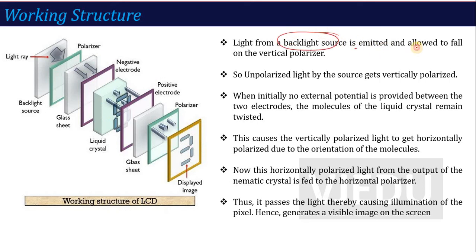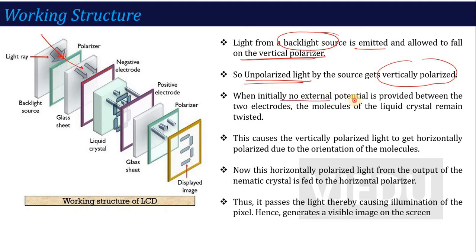Light from the light source is emitted and allowed to fall on the vertical polarizer. The unpolarized light will get vertically polarized due to this polarizer. This light will pass through the glass sheet and come to the electrode. Initially, when no external potential is provided between the two electrodes, the molecules of the liquid crystal remain twisted. This causes the vertically polarized light to get converted to horizontally polarized light due to the orientation of the molecules.